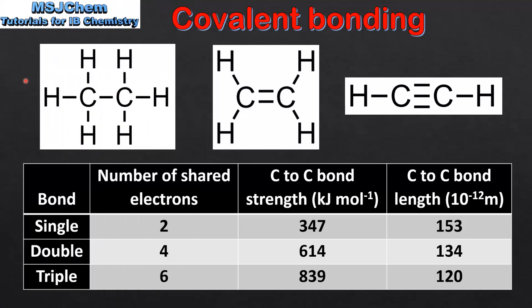Next we look at single, double and triple covalent bonds. Here we can see the structural formulas of three organic molecules. From left to right we have C₂H₆ which is ethane, C₂H₄ which is ethene, and C₂H₂ which is ethyne. Ethane has a single covalent bond between the two carbon atoms, ethene has a double covalent bond, and ethyne has a triple covalent bond between the two carbon atoms.